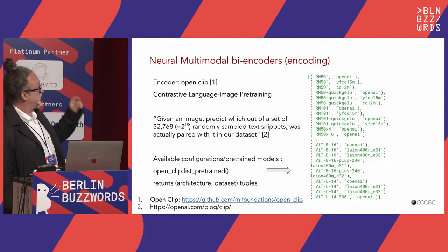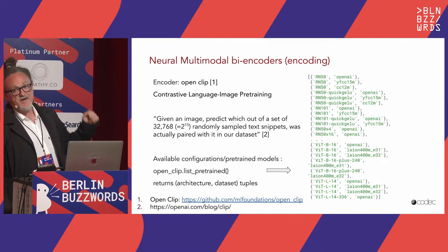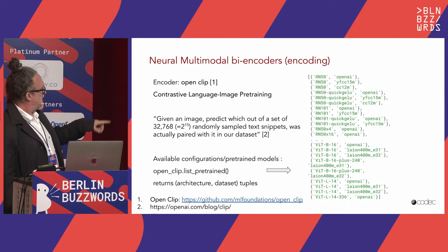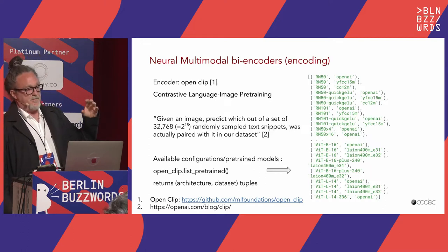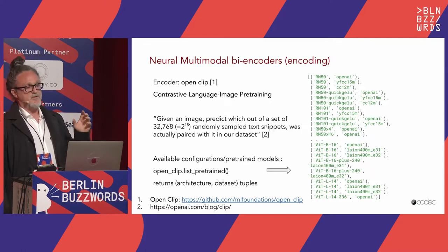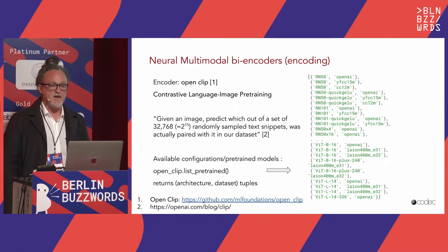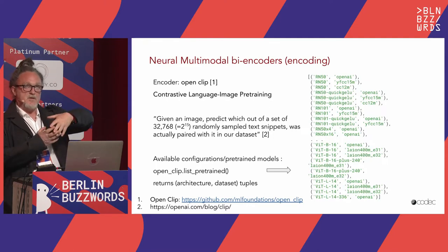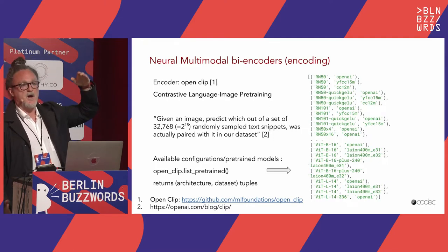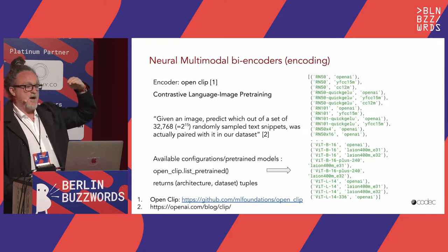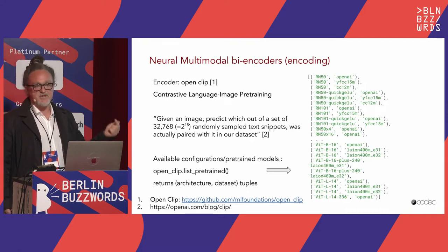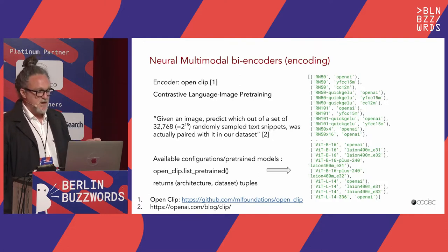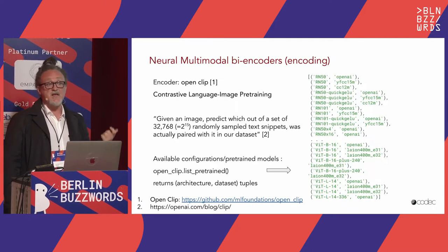For this demo we're using OpenCLIP, which is an open version of OpenAI's CLIP. The entire idea behind CLIP — what the OpenAI team calls Contrastive Language-Image Pre-Training — is that they present the network with an image and a large set of potential text captions, and ask the model to predict which sentence was actually paired with that image. What you get back is a model that can encode both an image and text into the same vector space.